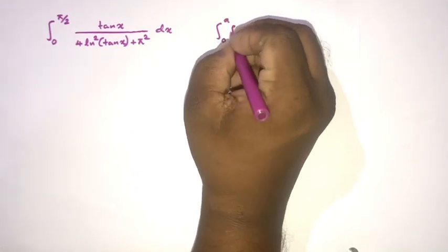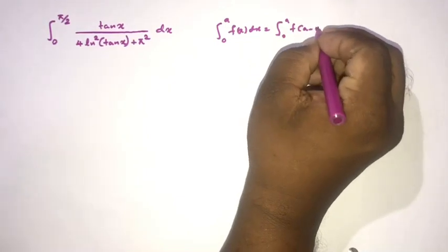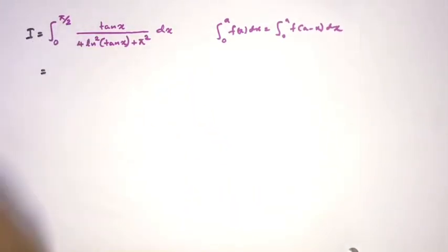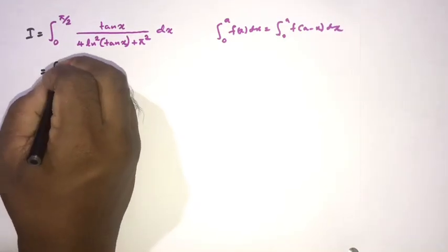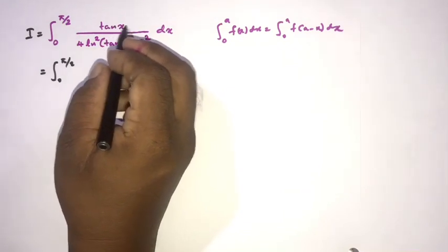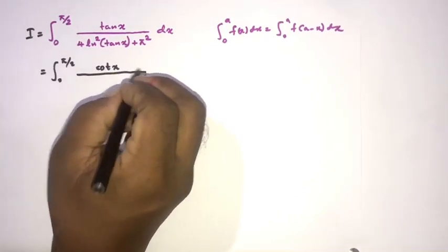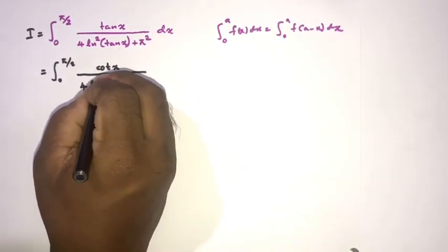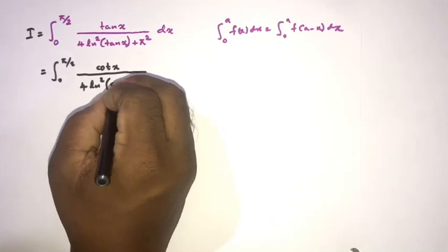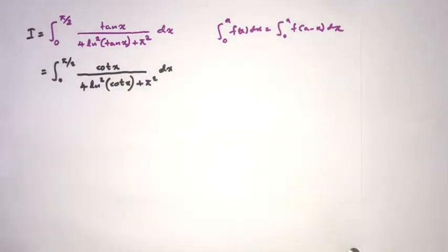King's rule states that the integral from 0 to a of f(x) dx equals the integral from 0 to a of f(a − x) dx. Calling our integral I, we apply this: tan(π/2 − x) = cot(x), so we write the integral from 0 to π/2 of cot(x) over [4·ln²(cot x) + π²] dx.